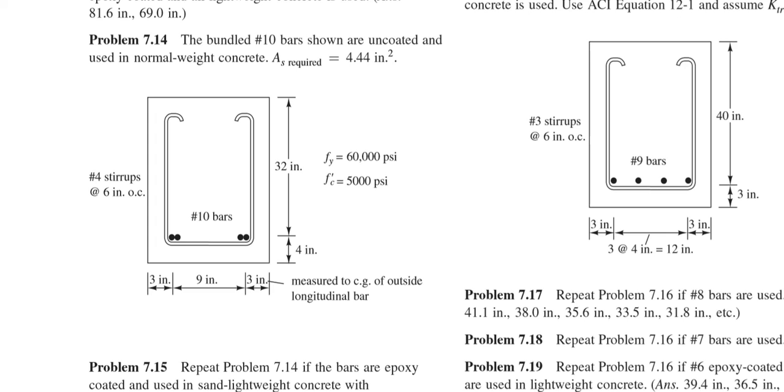As it is provided we can decrease our development length if I provide more reinforcement. Sorry, it is as required based on the calculation. Now see here stirrup is number 4 stirrup at 6 inch on center, that means 6 inch center to center, and this spacing here is given 3 inch. There is a note here measured to center of gravity of outside longitudinal bar, that means this 3 inch is actually at the middle of this, it's not the middle of these 2 bars, it's the middle of the outside longitudinal bar.